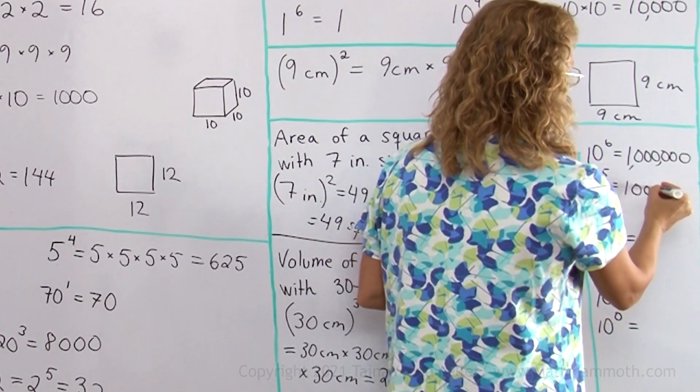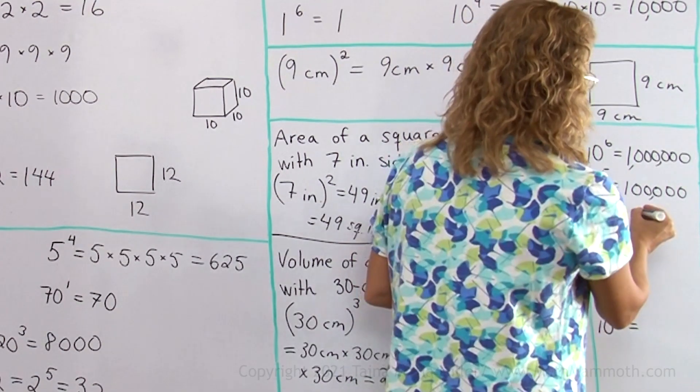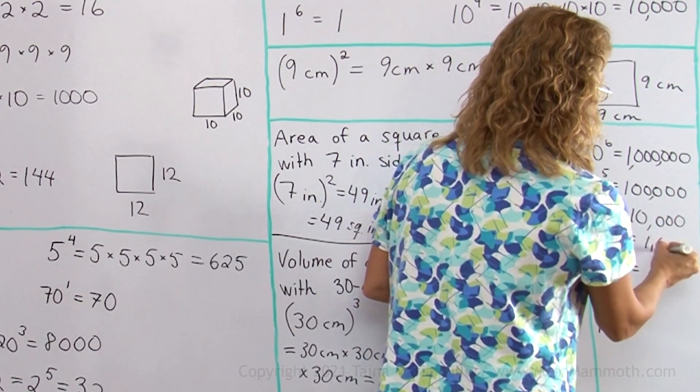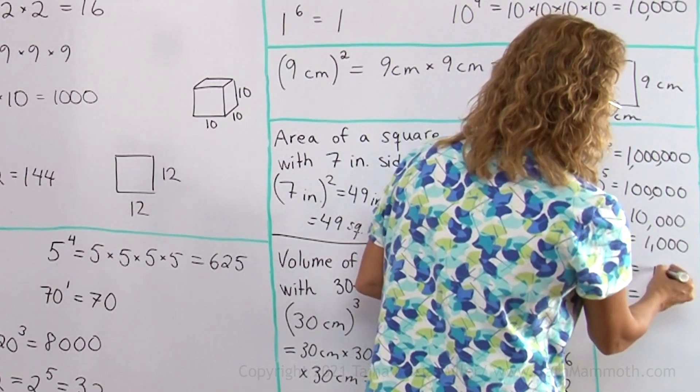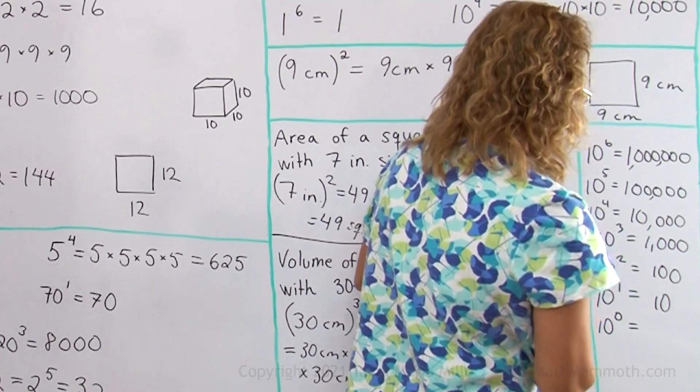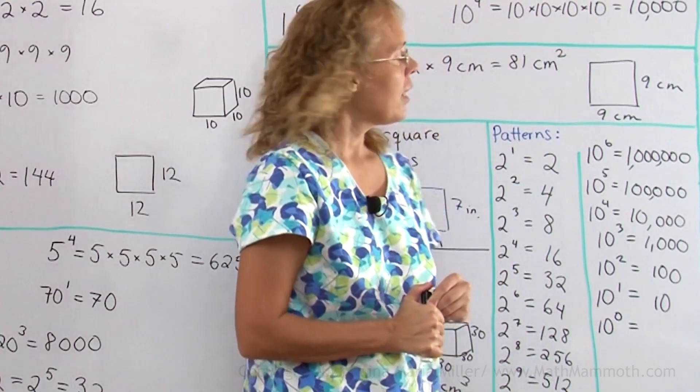So it's 100,000. Here would be 10,000. Here would be 1,000. This would be 100. This would be 10. And then what?